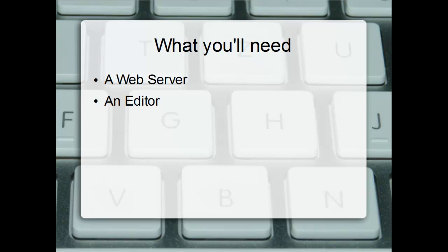So what are you going to need for your development environment? You're going to need a web server. In previous videos we just opened HTML files directly in the browser, but you can't do that with PHP because PHP has to be executed by a server. We'll be installing a version of Apache which has PHP built in, made for Windows — it's called an XAMPP installation from Apache Friends. It comes with Apache and PHP and will run from your local computer, so your Windows machine will be your web server.